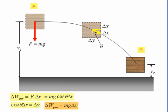So the work done in moving from A to B is just the sum of the work done over each small displacement and is equal to the force of gravity multiplied by the total vertical displacement.